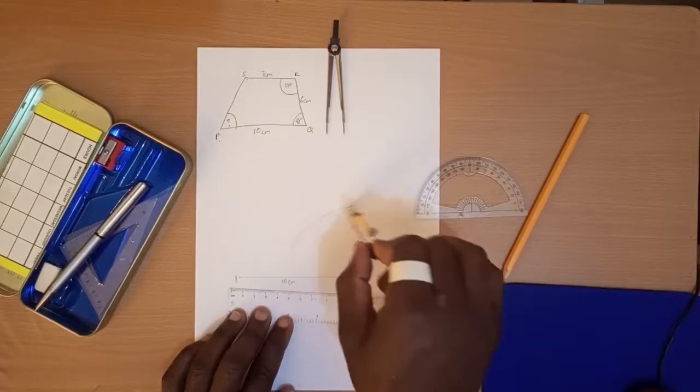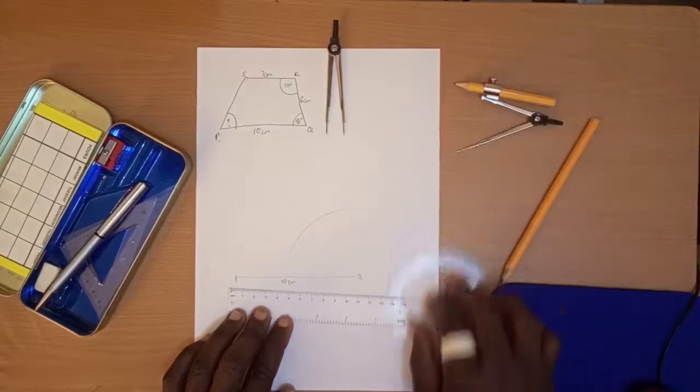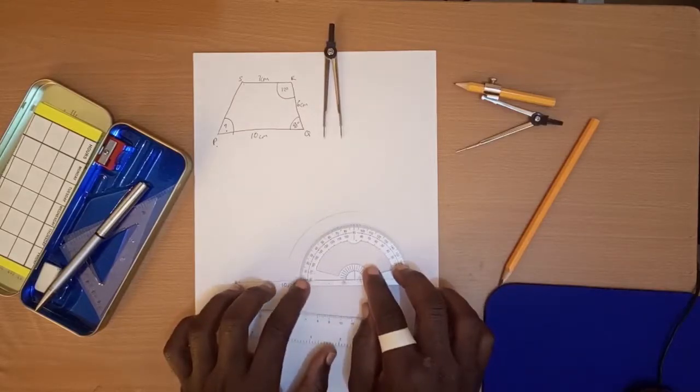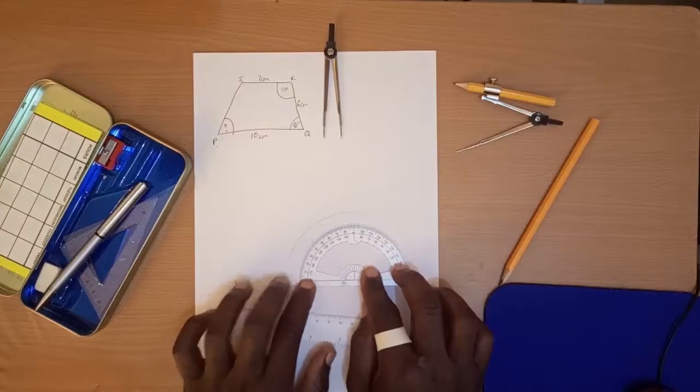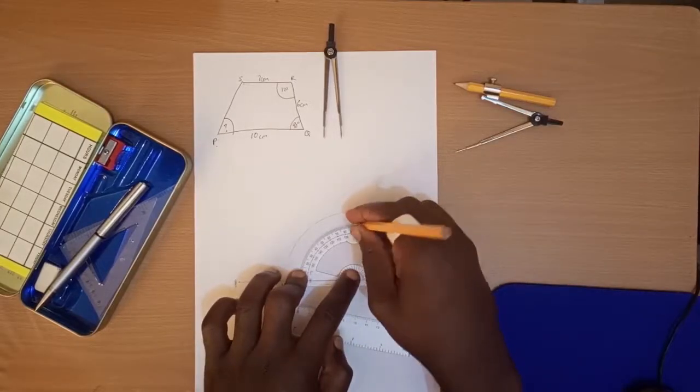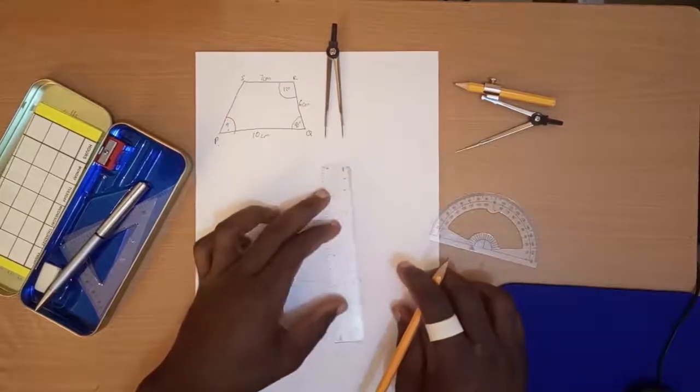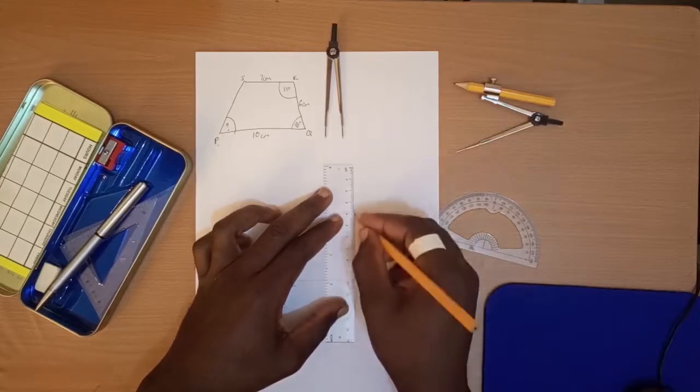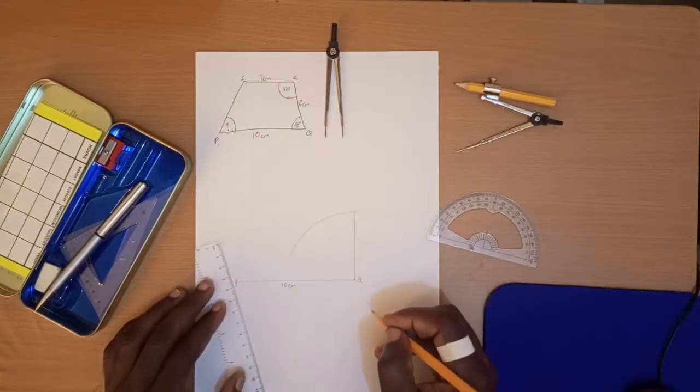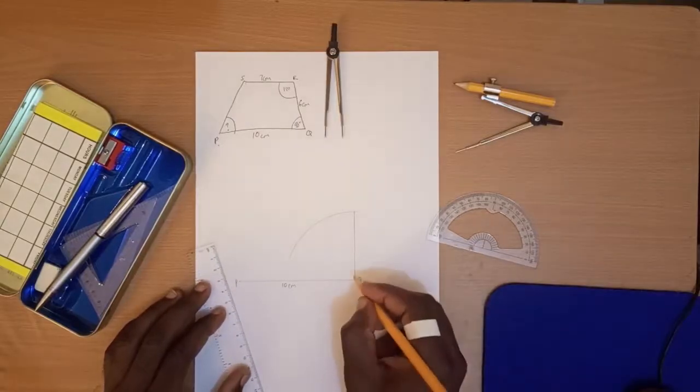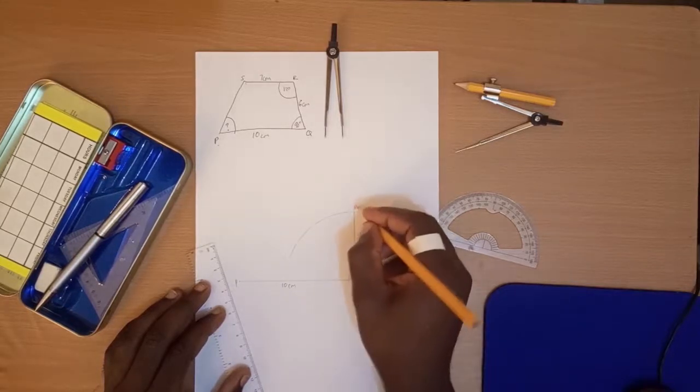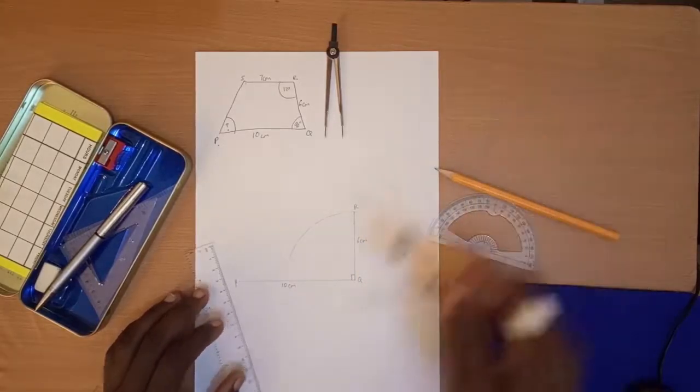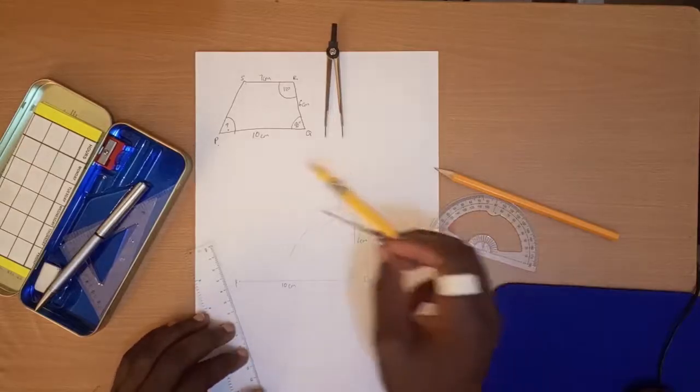We have been told that the angle PQR is 90 degrees, so we measure a 90-degree angle there. And so we connect. R will be formed there, and it is 6 centimeters.